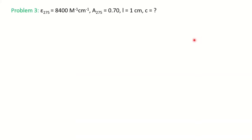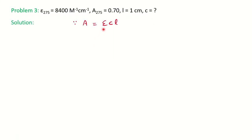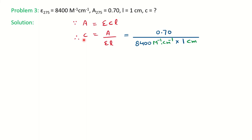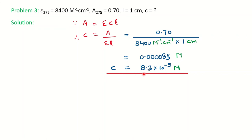An application of Beer's law is calculating the concentration of an unknown solution. In this problem, molar absorptivity ε is given, absorbance A is given, and L is given; they ask you to calculate the concentration. Put the formula A = εCL, rearrange for C, and put in the values. You get the concentration in molar, which is 8.3 × 10⁻⁵ mol/L.